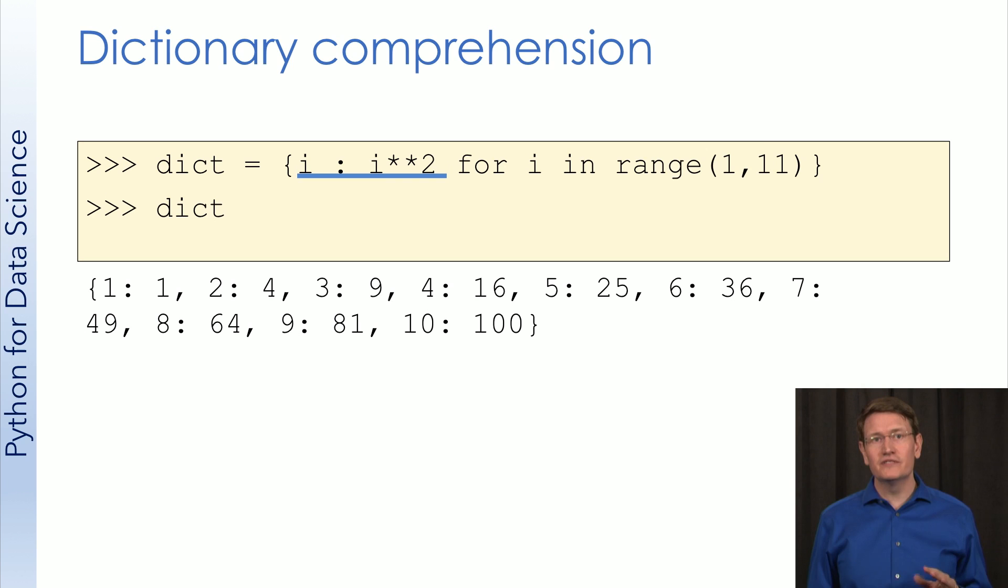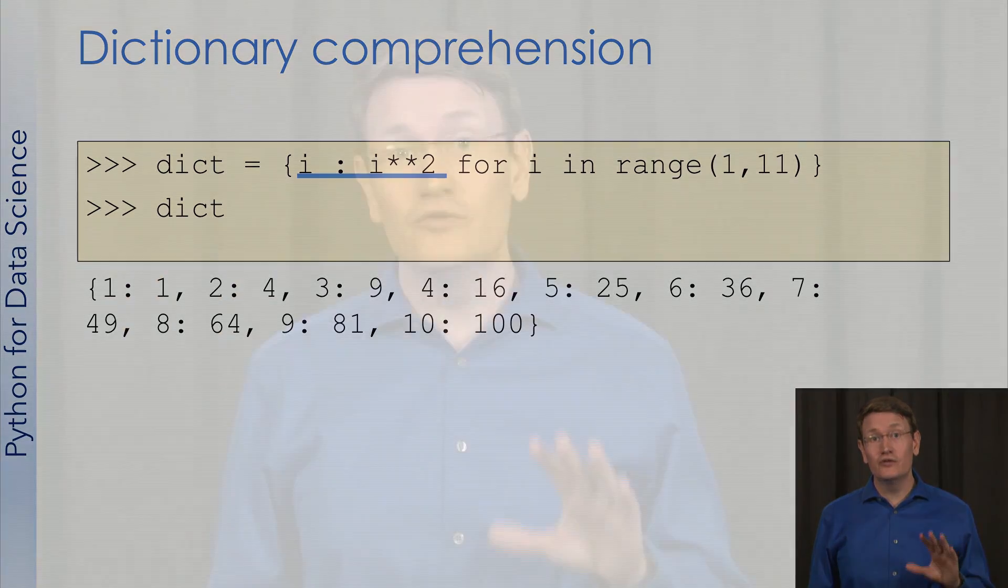I recommend you play with this a bit yourself. For example, could you build a dictionary of letters from capital A to capital Z as values, and their corresponding numeric ASCII values as the key? You might find the CHR function useful. OK, pause the video, take a minute, and try to do this yourself. Then resume the video, I'll show you the answer.